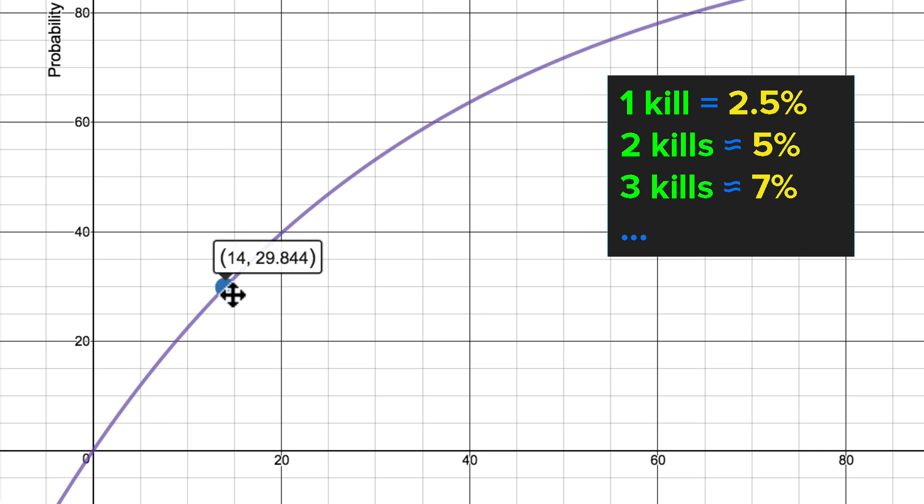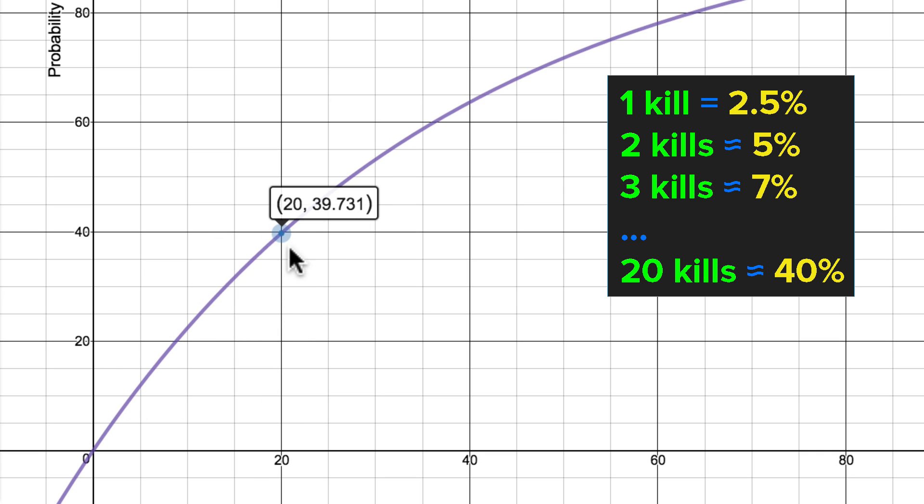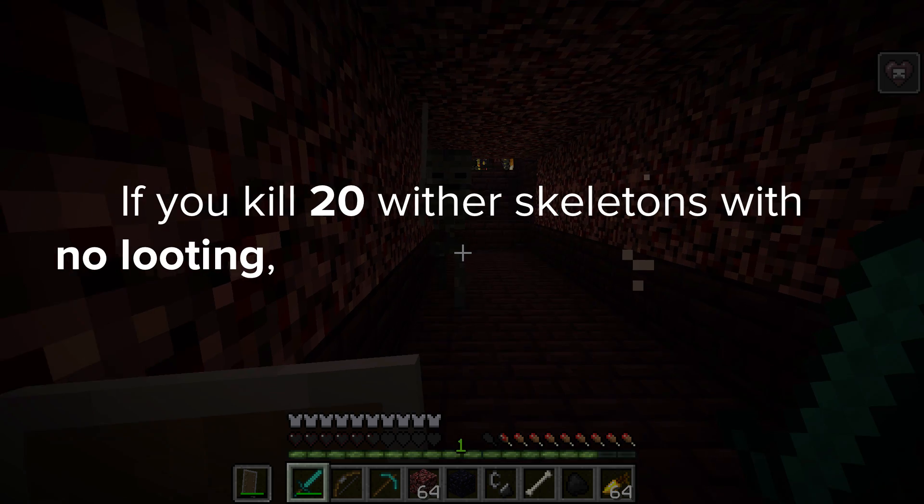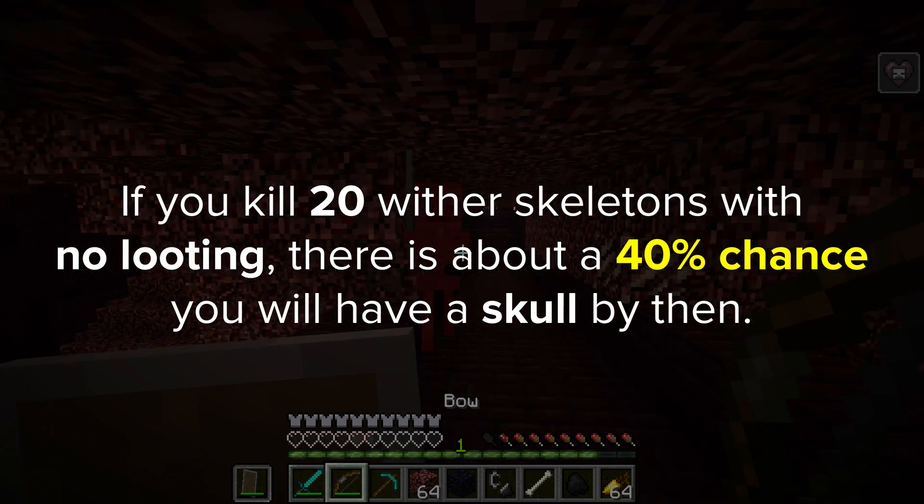All we need to do is go all the way to 20 on the x-axis, and we can see that that's 40 on the y-axis. So if you go into the nether and kill 20 Wither Skeletons with no looting, there is about a 40% chance that you will have a skull by then.